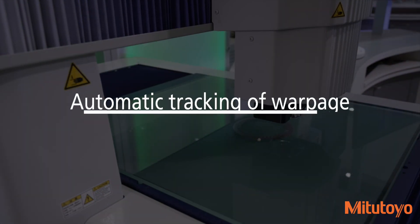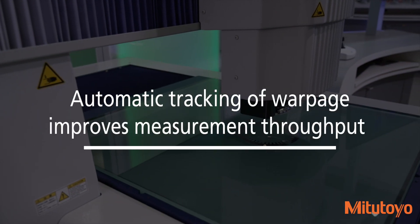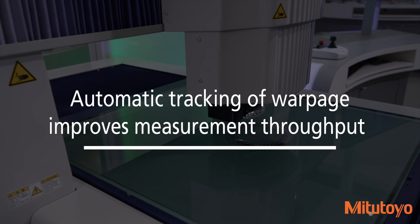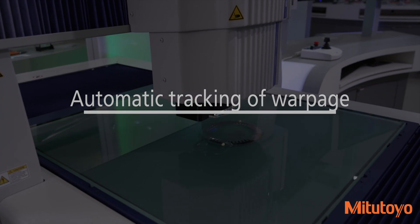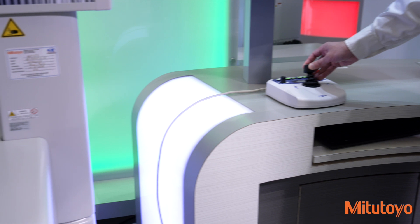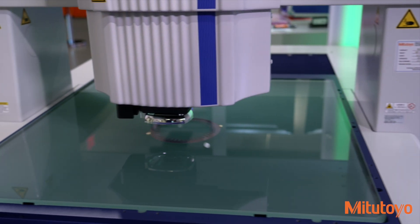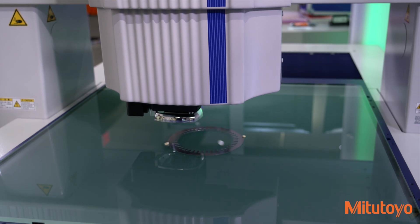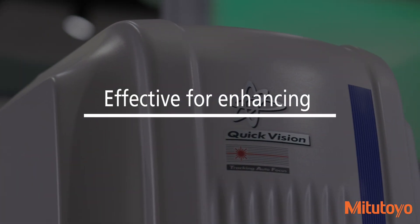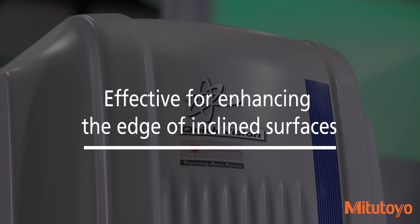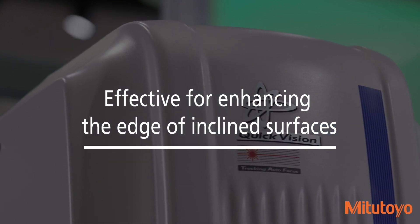With the optional TAF, automatic tracking of warpage improves measurement throughput and eliminates the need of focusing during manual measurement. The programmable ring light, or PRL feature, gives fine control of the angled ring light to provide optimal illumination for measurement. This type of illumination is effective for enhancing the edge of inclined surfaces or very small steps.